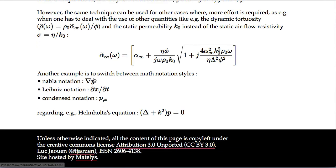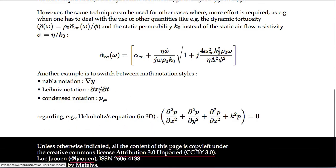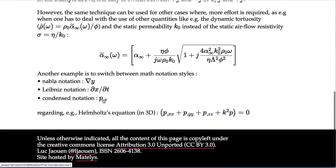Another example is to switch between math notations. So here we have the Helmholtz equation and we can switch between the nabla notation with the Laplacian here, or the Leibniz notation here in 3D, or the condensed notation here also in 3D. And you can switch not just one equation but the whole document between one notation to the other one.